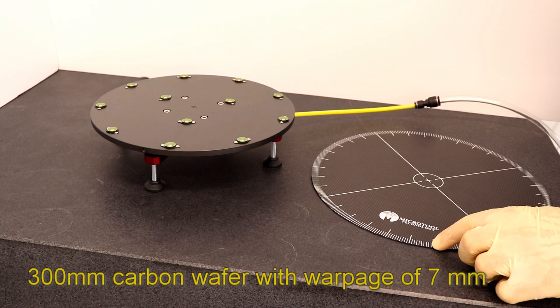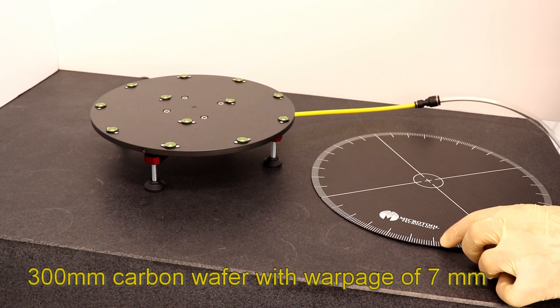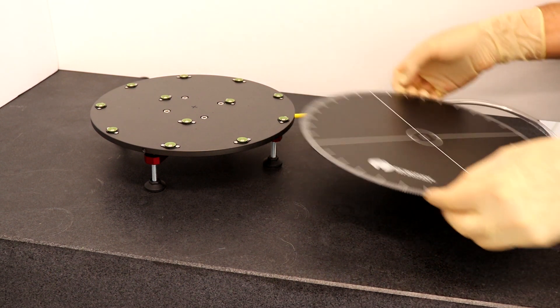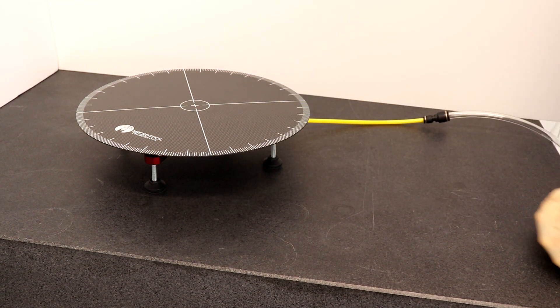This same chuck can also grip a 300 mm diameter carbon wafer of 7 mm warpage. The flow is self-adaptive and there are no moving parts inside of the chuck.